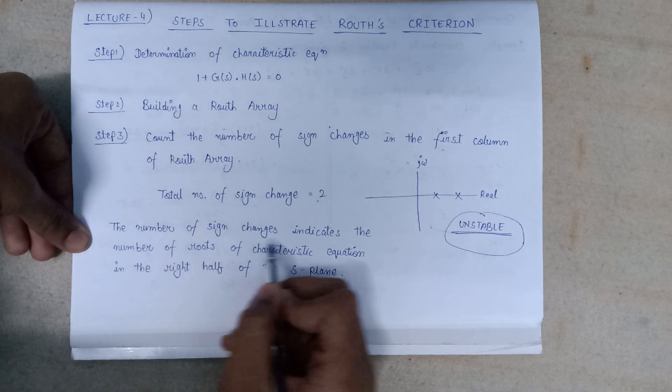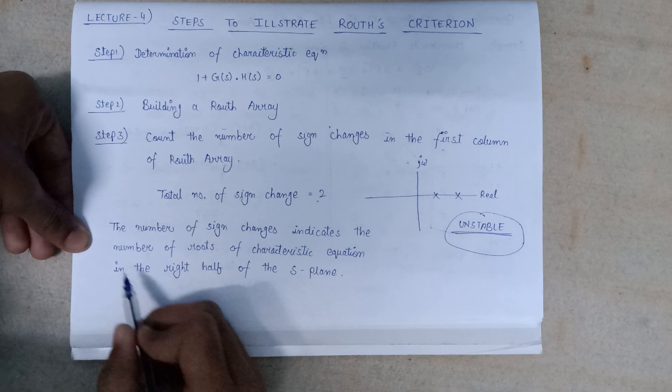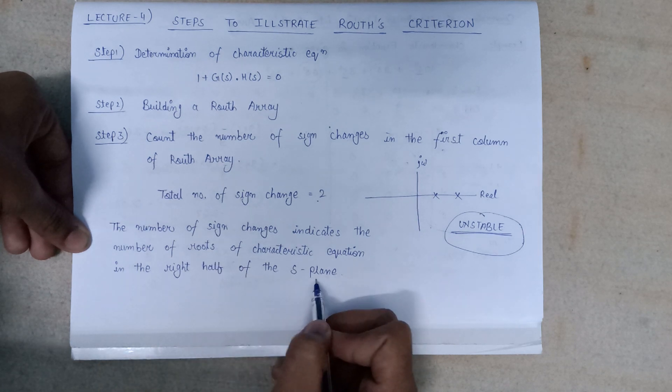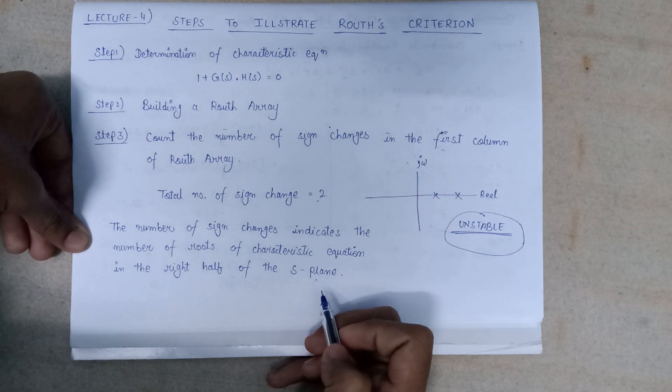The number of sign changes indicates the number of roots of the characteristic equation that lie in the right-hand side of the S-plane. This also explains the concept I described earlier.